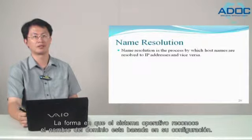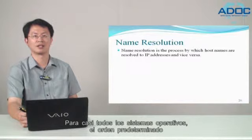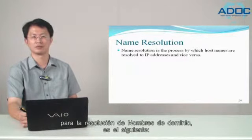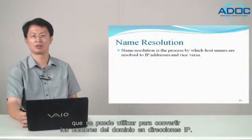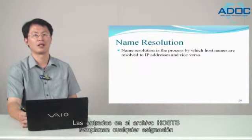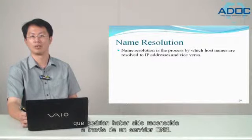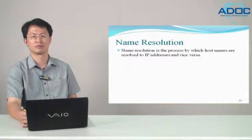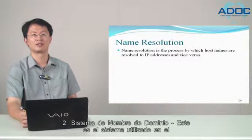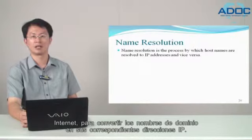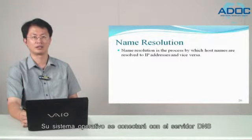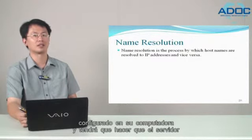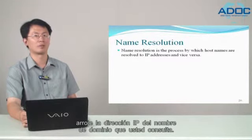The way the operating system resolves the domain name is based upon its configuration. For almost all operating systems, the default order for domain name resolution is as follows. First, the host file — there is a file called a host file that you can use to convert domain names to IP addresses. Entries in the host file override any mappings that would be resolved via a DNS server. Second, the Domain Name System — this is the system used on the internet for converting domain names to their corresponding IP addresses. Your operating system will connect to the DNS server configured on your computer and have that server return the IP address for the domain name you queried.